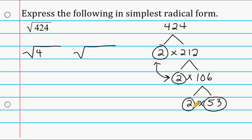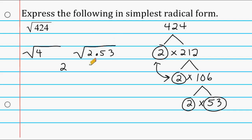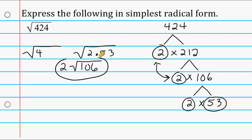We have a 2 left over and a 53 left over. Each one of these numbers does not have a number to pair up with, so we just write whatever we have remaining underneath our other radical symbol. We know the square root of 4 is 2, and we take everything under the other radical and multiply them out. 2 times 53 is 106, and we leave that trapped underneath our radical symbol. So 2 times the square root of 106 equals the square root of 424 — the square root of 424 in simplest radical form is 2 times the square root of 106.